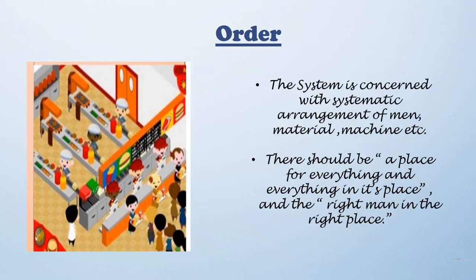The principle of order — Fayol breaks order into two types: social order and material order. Order, according to him, is nothing but a right place for everything and everything in its place. There should be a system concerned with the systematic arrangement of men, material, and machine. His main focus is: right man in the right place and right material for the right work.